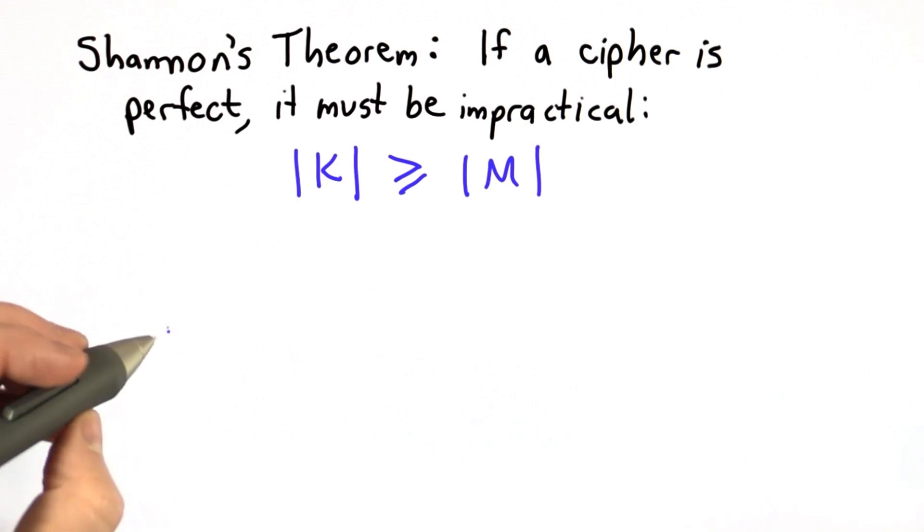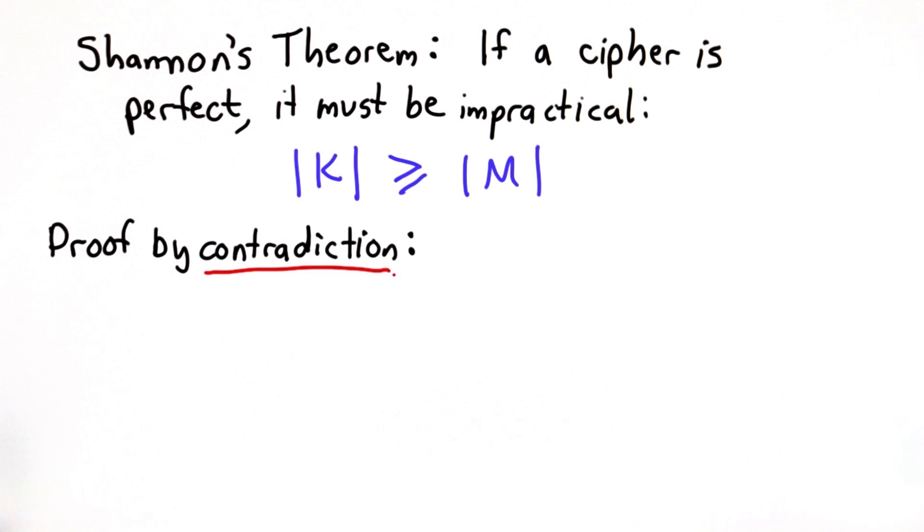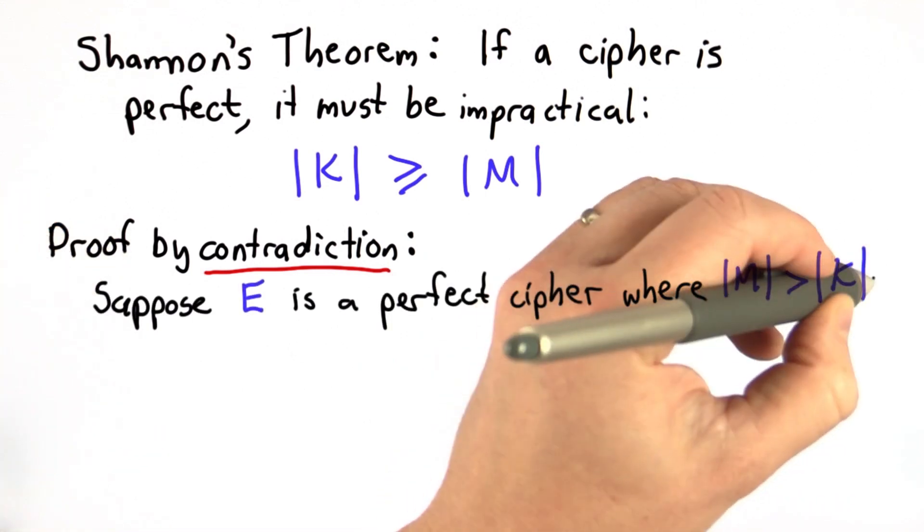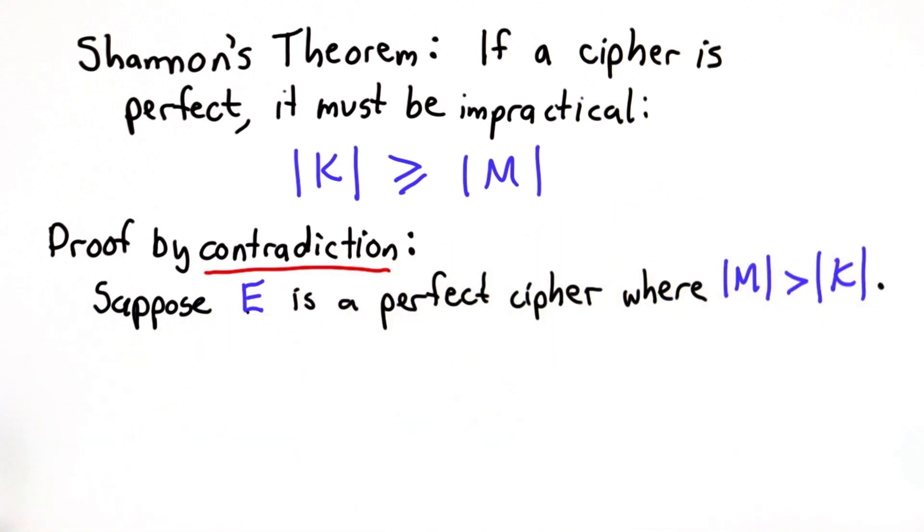So let's prove this property, and we're going to prove it by contradiction. So we're going to start by assuming that we do have a perfect cipher that does not satisfy this property. So suppose we do have some perfect cipher, we'll call it E, where the number of possible messages is greater than the number of possible keys.